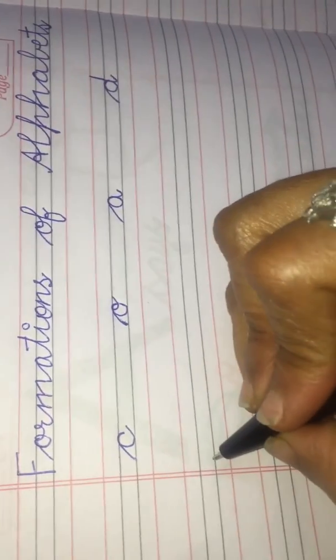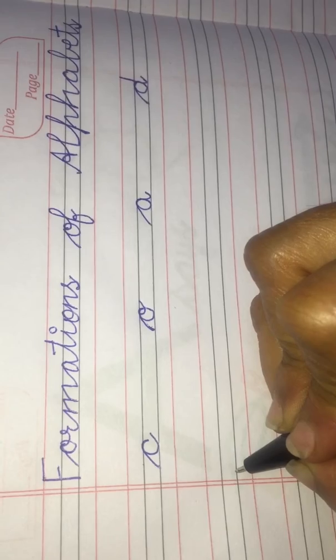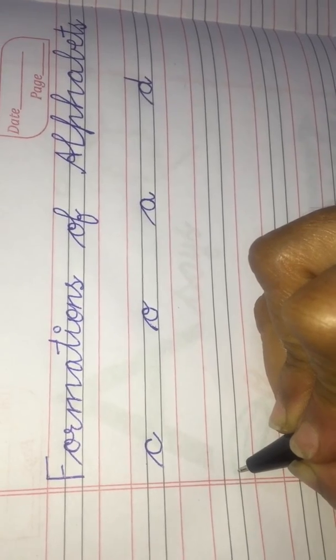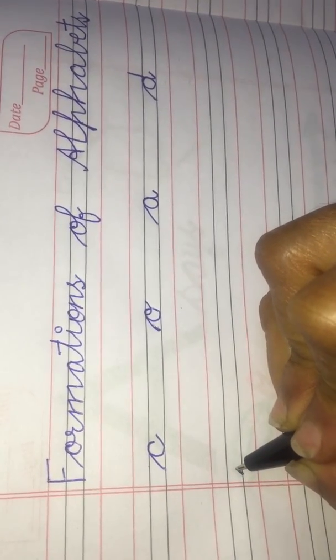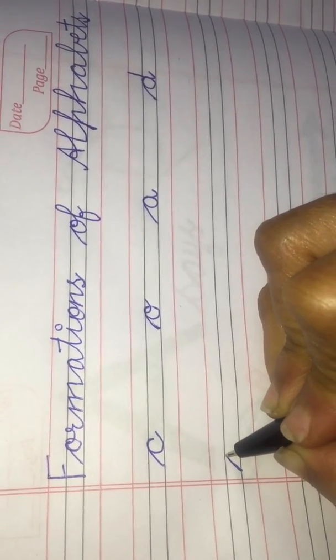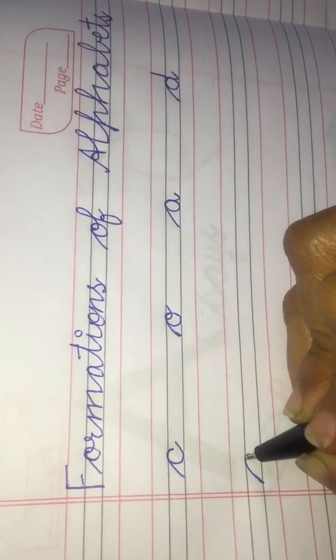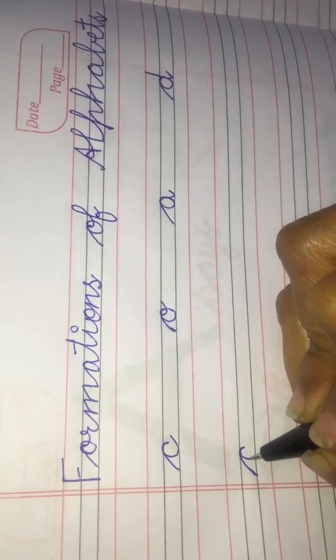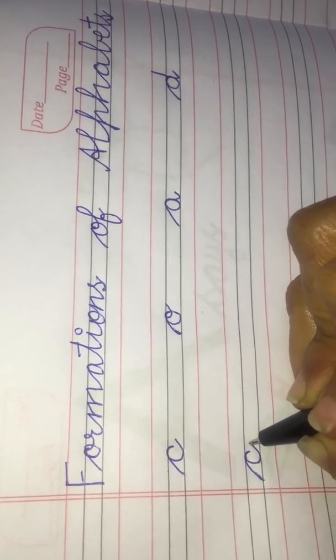Now we will make again. We will make letter C. Start from the third line, go up, make a curve and go up.